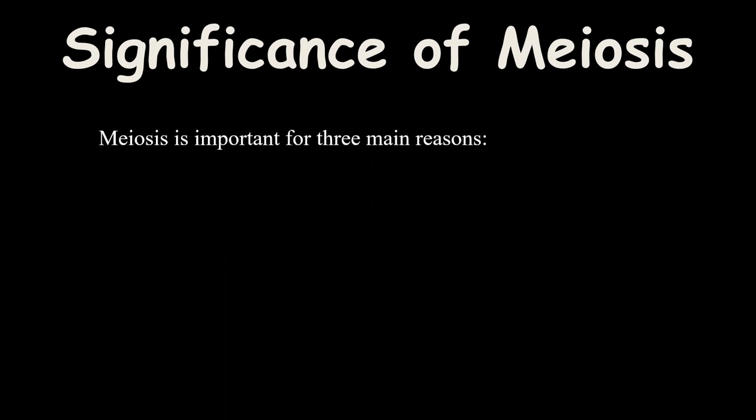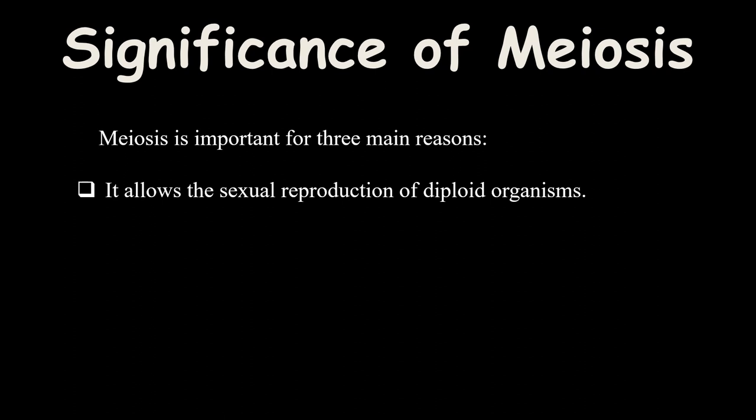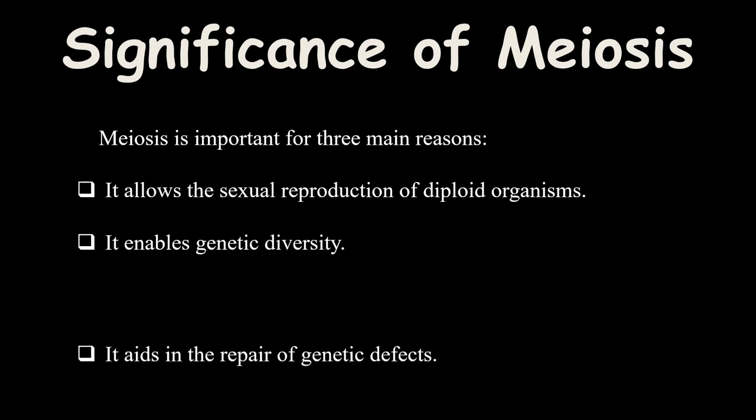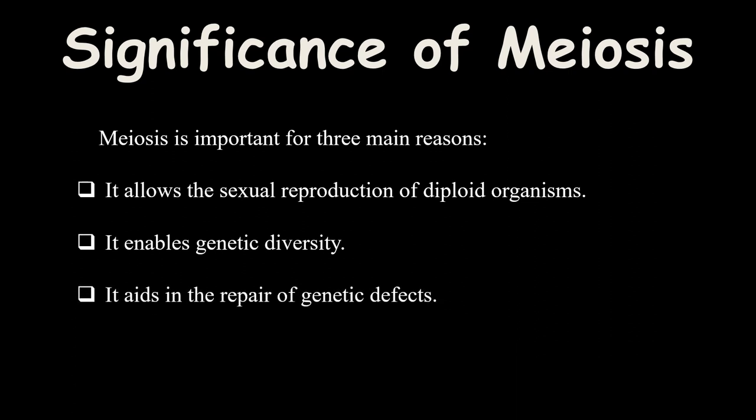What is the significance of meiosis? Meiosis has three important reasons why it must take place in specific cell types. First, it is involved in the reduction of chromosomes from diploid to haploid, enabling survival through sexual reproduction. Second, it enables genetic diversity through genetic recombination in prophase 1 and the random assortment of chromosomes. Third, it aids in the repair of genetic defects, which are removed through recombination of alleles.